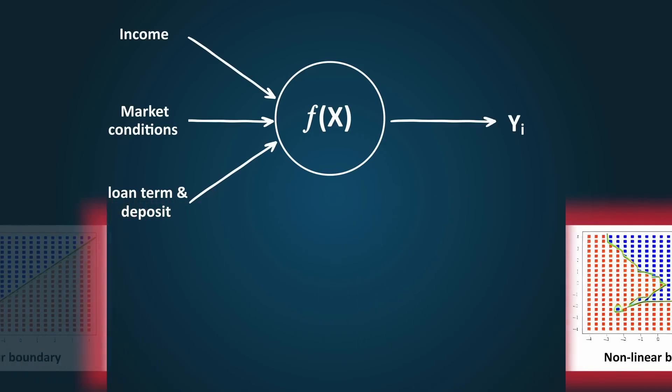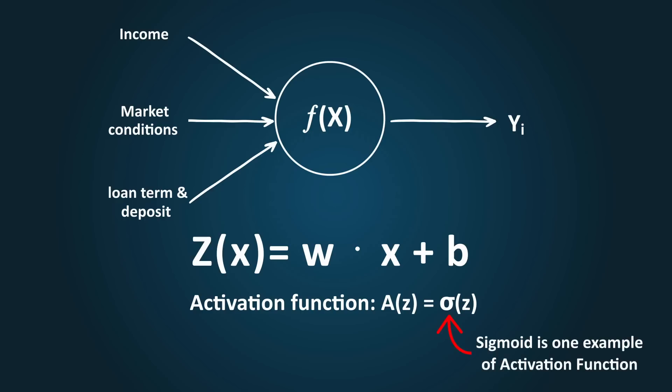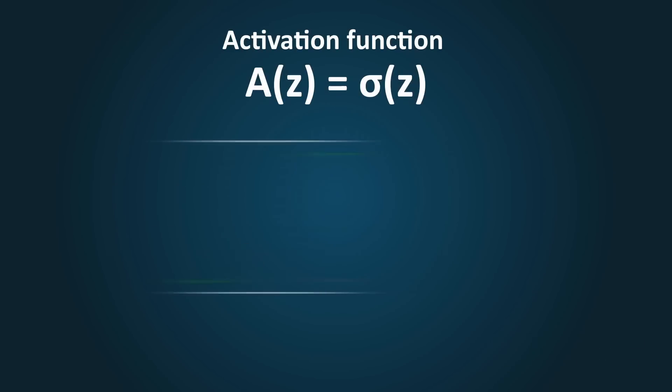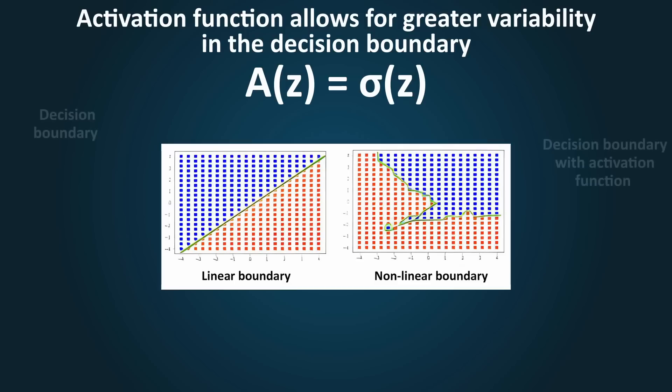A problem like this is solved by using a mathematical trick, which we call an activation function. This activation function, represented by A in this formula, is a mathematical function we apply to our output z of x. There are different choices for an activation function, but a good example is the sigmoid function. An example of a sigmoid function is the following. This mathematical treatment allows for a greater variability in the decision boundary by introducing non-linearity to the linear formula z of x.